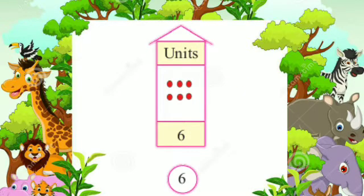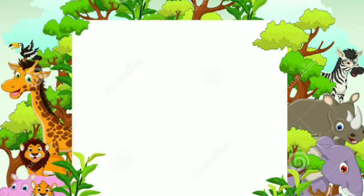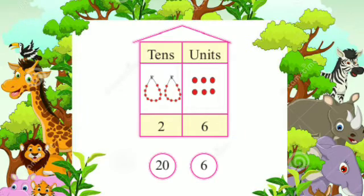In the number 6, there is 6 in the units place, so the place value of 6 is 6. The place value of 2 in the number 26 is 20, and the place value of 6 is 6.